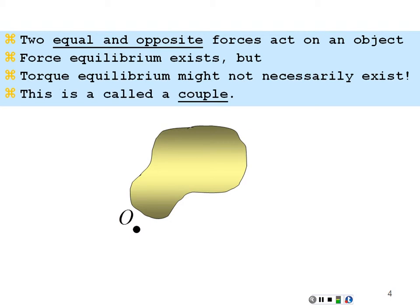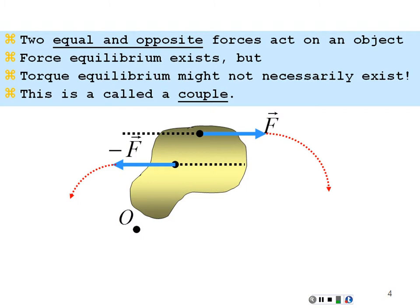Here's a situation where two forces act on an object and are equal and opposite, so the net force is zero. However, defined from some origin, they each have a different moment arm, and hence there is a net torque on the object. The force further away has a longer moment arm and thus a larger torque, resulting in a net torque forcing the object to go clockwise — with the torque vector directed into the page. This situation — force equilibrium but not torque equilibrium — is called a couple.